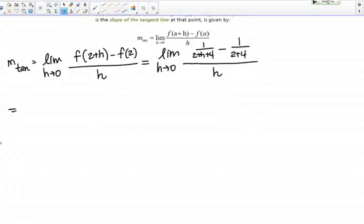If I simplify a little, this is the limit as h goes to 0 of 1 over 6 plus h minus 1 over 6 in the top. That's all over h.